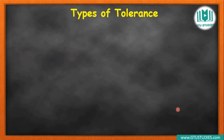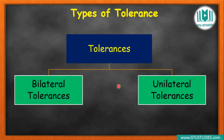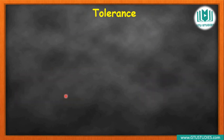Now we understand the meaning of tolerances and the types of tolerances. The types of tolerances are two types: one is bilateral tolerances and the other is unilateral tolerances. The common meaning of bilateral is 2, and unilateral is 1.